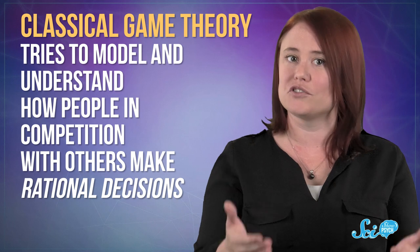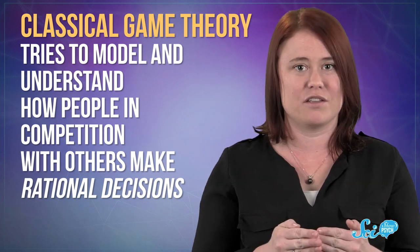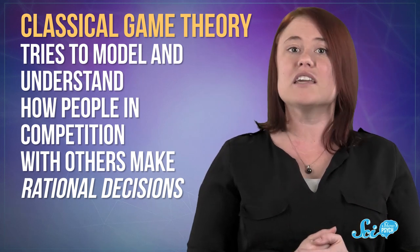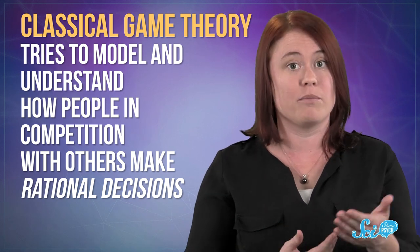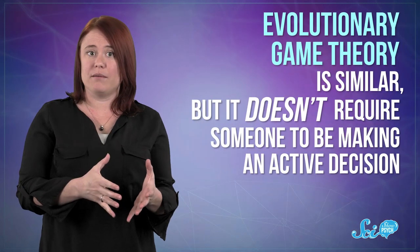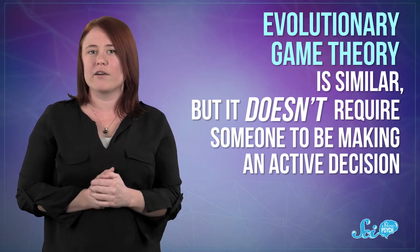Classical game theory tries to model and understand how people in competition with others make rational decisions. Think war strategy, like figuring out whether to drop a bomb, given what you think your opponent will do in return. Evolutionary game theory is similar, but it doesn't require someone to be making an active decision. For that reason, it's useful in biology, because scientists can use it to identify tactics that work well for populations, like why peacocks would have evolved such elaborate and showy feathers.